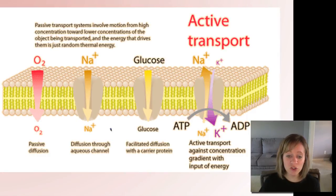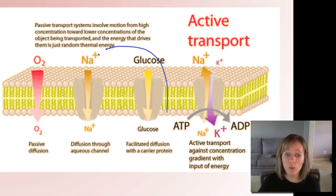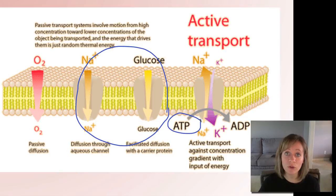So to summarize all these transport types: simple diffusion moves from high to low and small molecules can do that freely. Facilitated diffusion is for ions and larger molecules that require membrane channel help. And active transport requires ATP because we're moving from low to high.